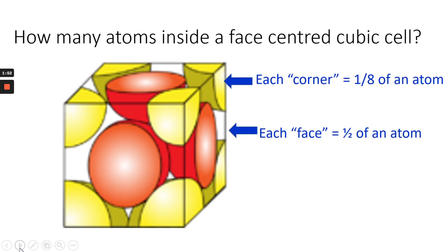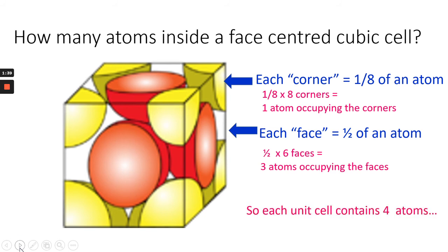Inside a face-centered cubic cell, again, there are eight corners, so therefore one atom occupying those corners. Each face is half of an atom, six faces, and three atoms occupying the faces, and one atom occupying the corners, and there's a total of four.